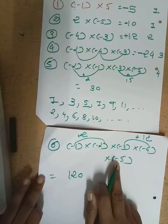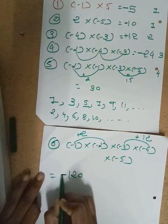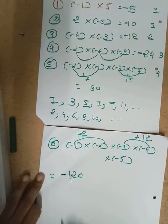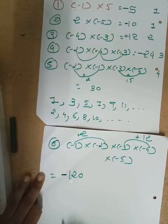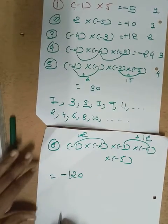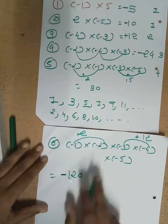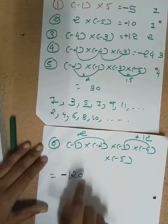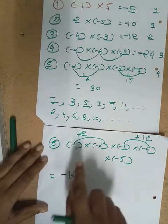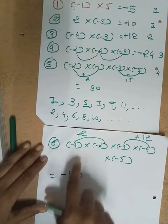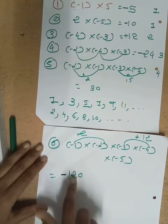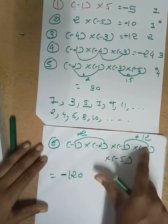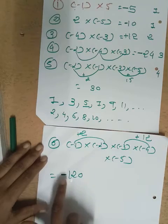Example six: minus one multiply by minus two multiply by minus three multiply by minus four multiply by minus five. Simple multiplication: one twos are two, three fours are twelve, and five times — working through gives one hundred twenty. There are five minus signs — that is odd — so the answer is minus one hundred twenty.